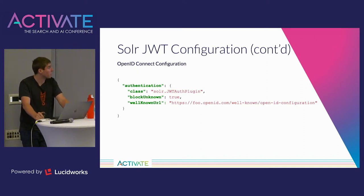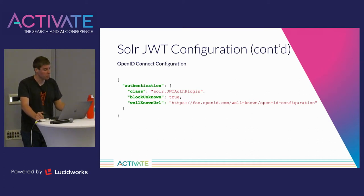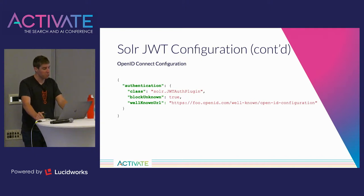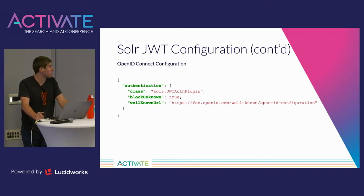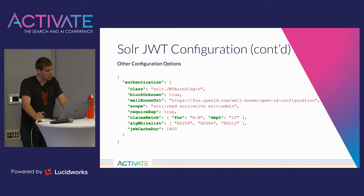The JWT plugin configuration requires one of these three properties — a JWK, a JWK URL, or a well-known URL — to verify the signature. With the signature verified, the rest of the JWT plugin options involve checking various claims in the JWT itself. All of these additional options are optional. There's a scope property that takes a regex which must match a scope claim in the JWT — if the claim isn't matched, the token gets rejected with a 403. The require-exp property controls whether an expiry claim is required; without it, a JWT could be valid for all eternity, which is a security problem.